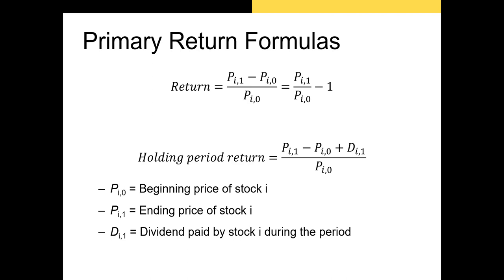If we have earned some income in the form of a dividend or rental income, we need to factor that into our return on investment. That's why we have the holding period return formula. The only difference is that we include the dividend or income in the numerator. Let's try a few examples using these formulas.